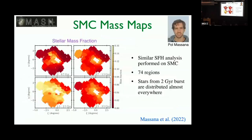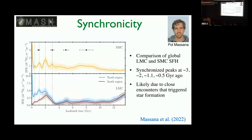Paul Massana did the same analysis for the SMC, broken into 74 different regions. Stellar mass fraction maps show a large burst of star formation in one region around the 2-gigayear age bin. Comparing SMC (top) and LMC (bottom) split into north and south regions, the dashed lines show peaks in star formation that are really synchronized between the Clouds — especially at 2, 1, and 0.5 gigayears ago — due to close interactions of the Clouds with each other. This 2-gigayear starburst is also seen in the chemistry — exciting to see it in two independent lines of evidence.